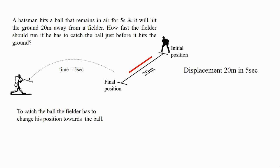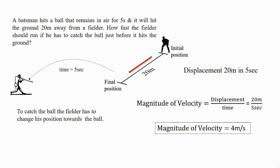Displacement of the fielder is 20m in 5 seconds. Magnitude of velocity is equal to displacement upon time equal to 20m upon 5 seconds. Magnitude of velocity comes out to be 4m per second.